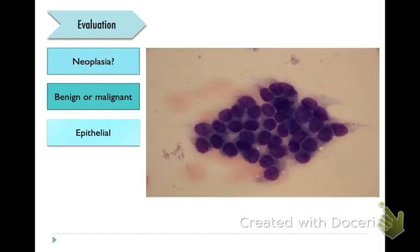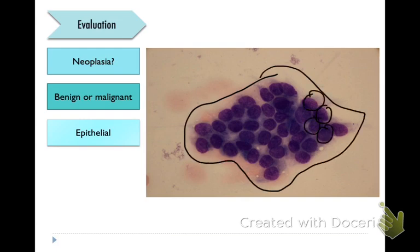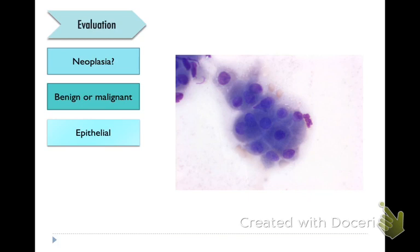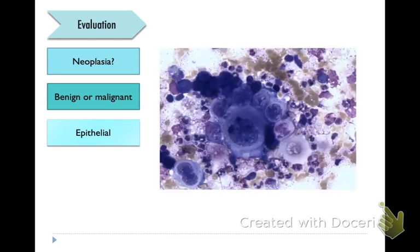Epithelial populations, on the other hand, form tight adherent aggregates, kind of like these islands, with each of these cells adhering to each other with cell-cell junctions. Another example of an epithelial population, this time with a little bit of atypia, a little bit of anisokaryosis and disorganization. And this one here is another epithelial population but this has a lot of criteria of malignancy — anisokaryosis, anisocytosis, large clearly visible nucleoli — and this is probably a carcinoma.